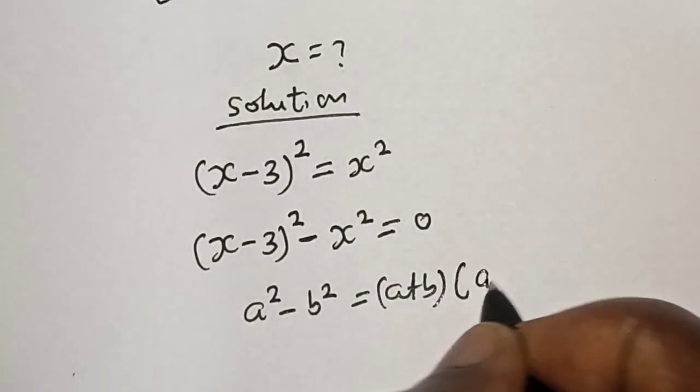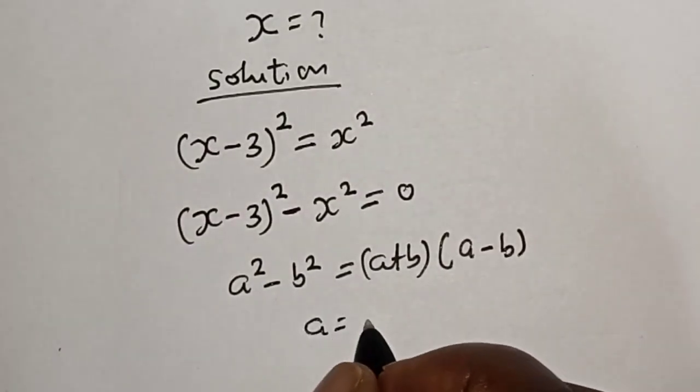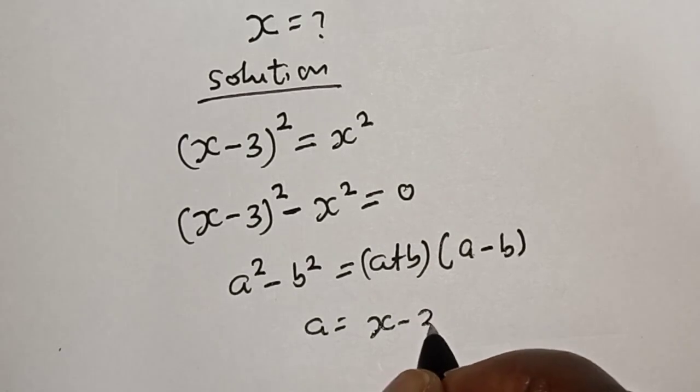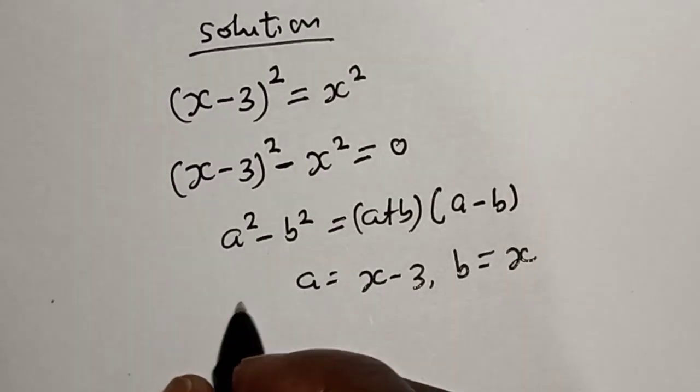So a is equal to x minus 3, b is equal to x.